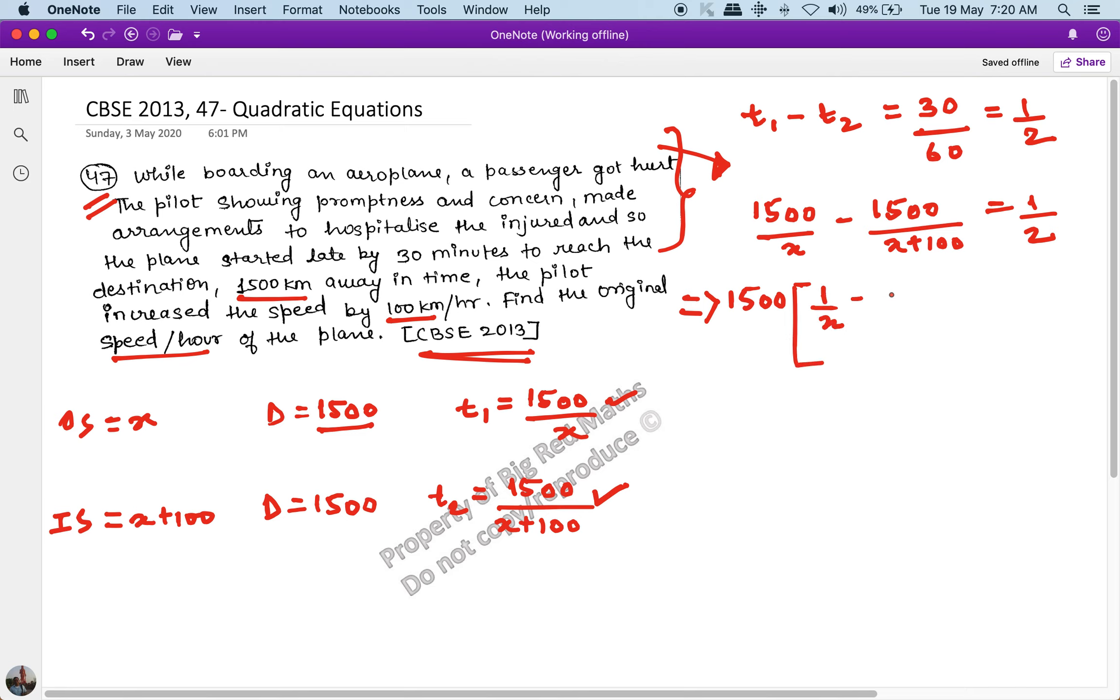And this becomes 1 upon x minus 1 upon x plus 100 equals 1 upon 2. And cross multiplying, this becomes 1500 into 2 is equal to x plus 100 minus x, and this whole thing divided by x into x plus 100, and this is equal to 1. So this becomes 3000 into 100.